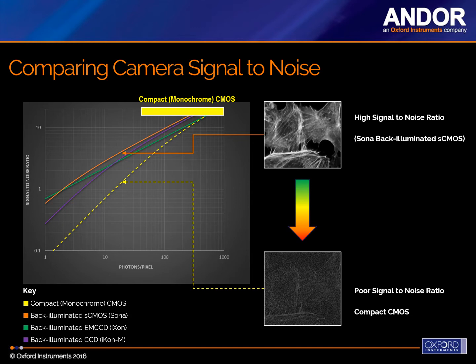Back-illuminated sCMOS cameras give a high SNR under slightly more demanding conditions. And ultimately, due to the EM gain technology, EMCCD cameras still deliver the best image at very low light levels, operating effectively with very small numbers of photons per pixel.